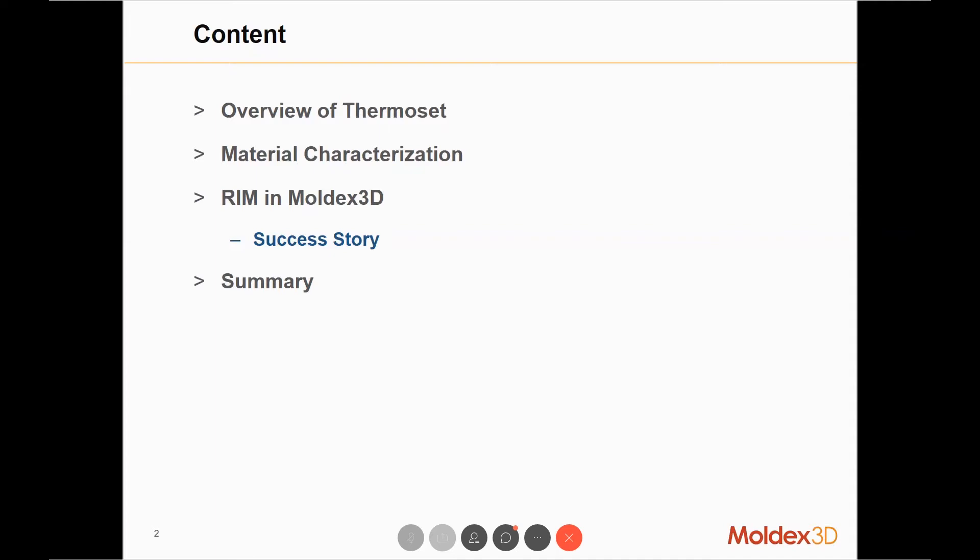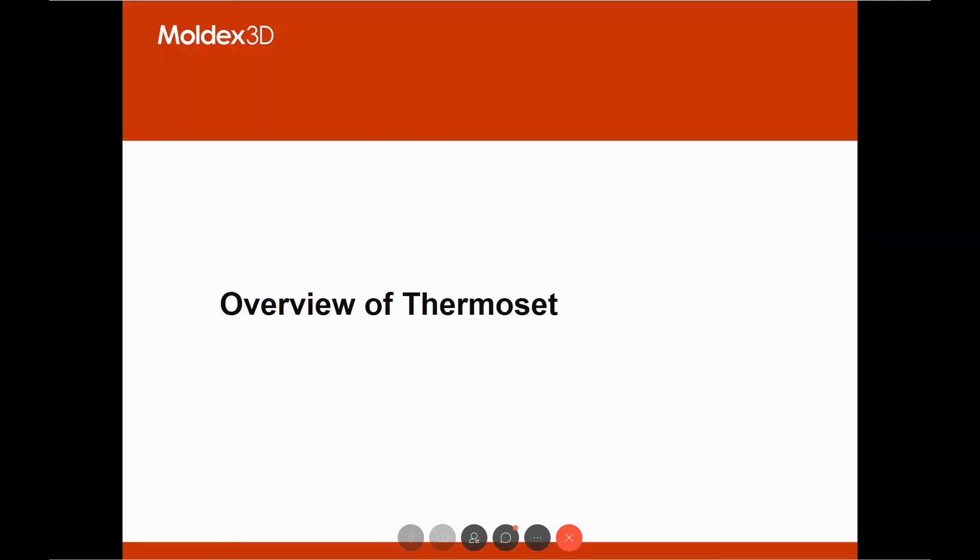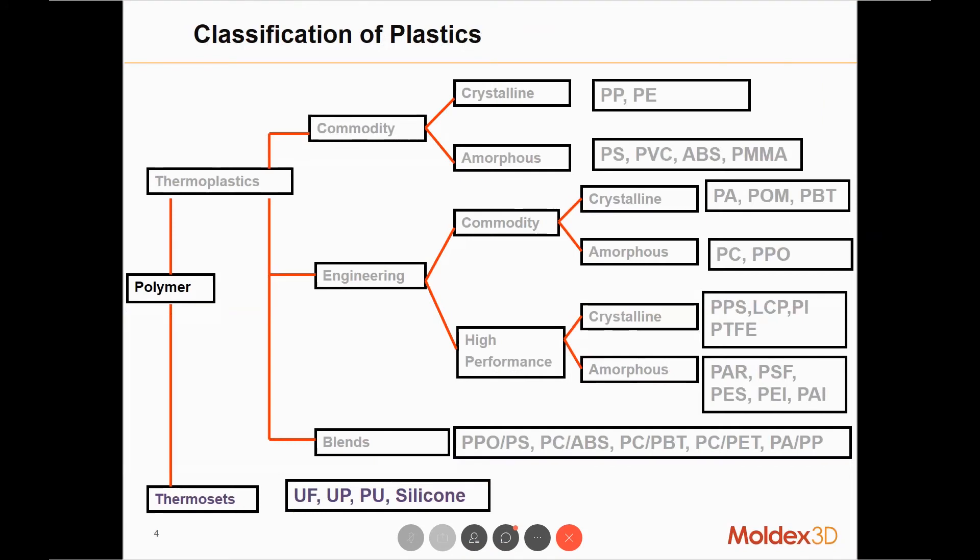Now let's start with a quick overview of thermoset. As we all know, plastic polymers are categorized into two main categories: thermoplastics and thermosets. They are both widely used in the plastic industry.